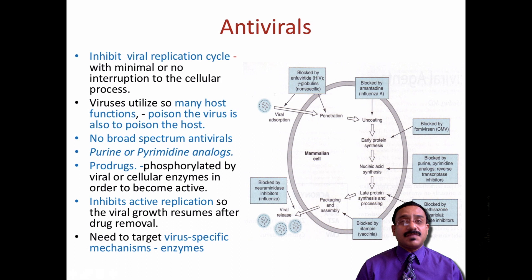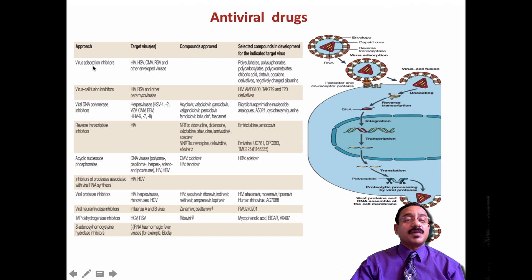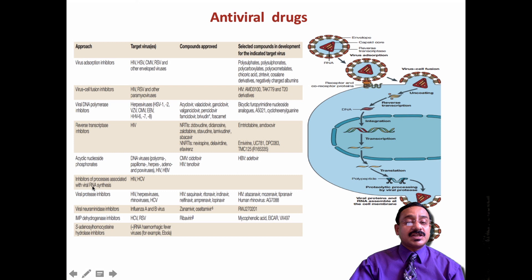Targeting viral-specific enzymes is one important method. The main antiviral drugs using various approaches are: virus absorption inhibitors, virus-to-human cell fusion inhibitors, viral DNA polymerase inhibitors, reverse transcriptase inhibitors (as in the case of HIV), acyclic nucleoside phosphonates — very specific antiviral drugs used for DNA viruses like herpes and pox viruses — and inhibitors of processes associated with RNA synthesis like HIV and HCV. Viral protease inhibitors are needed for breaking down polycistronic poly-proteins.